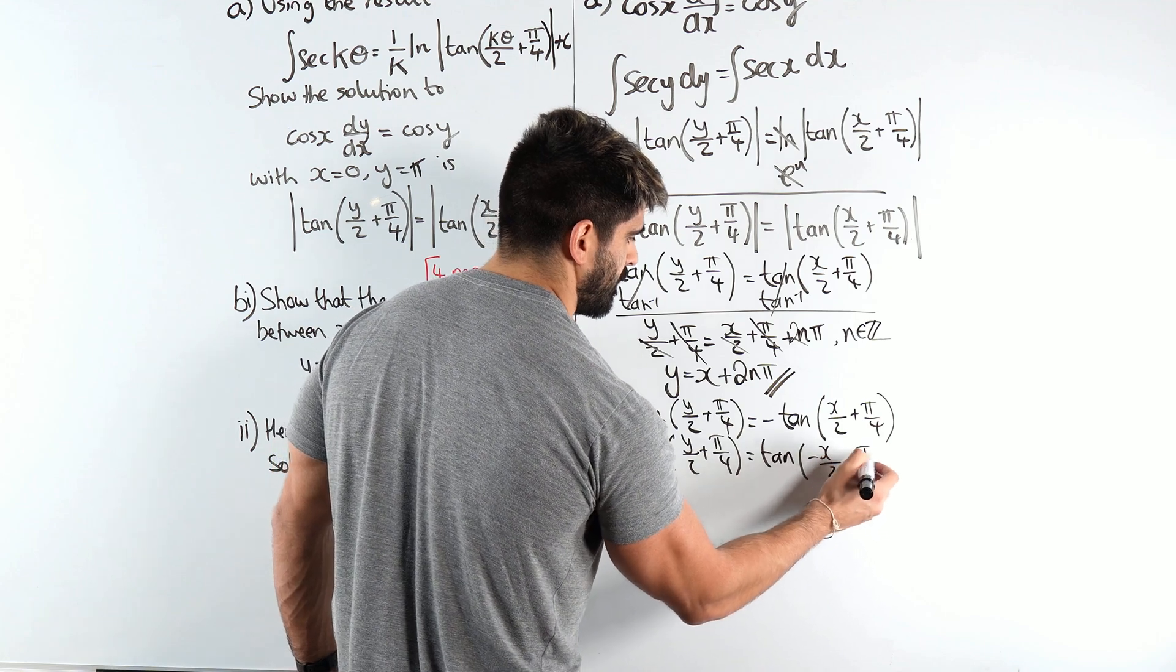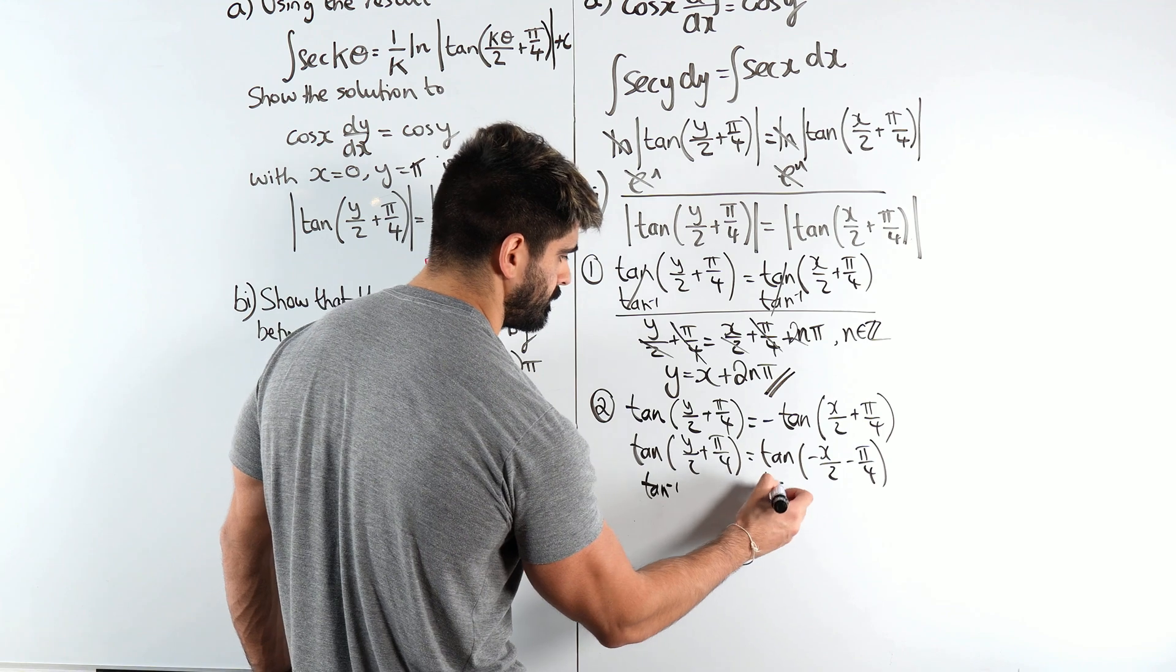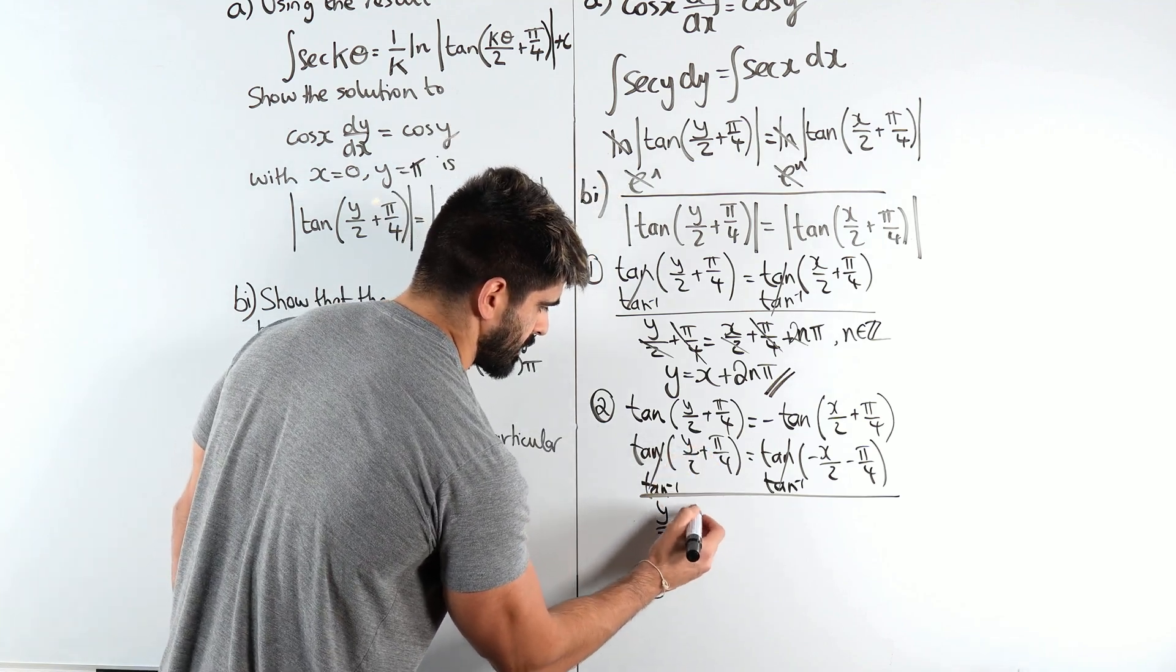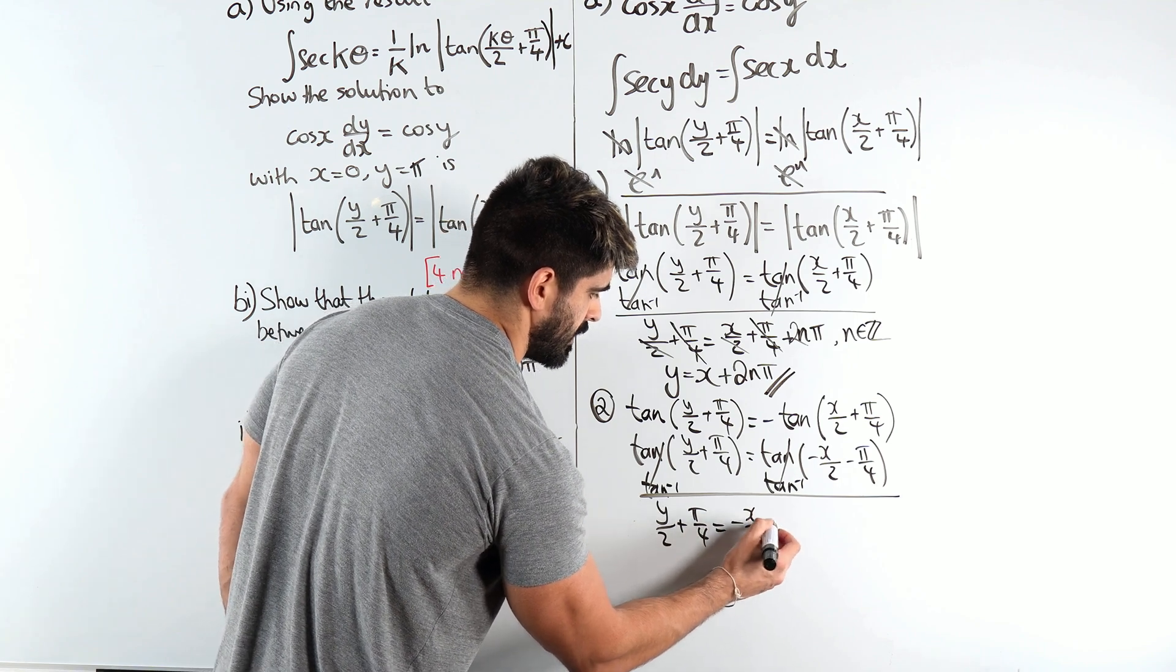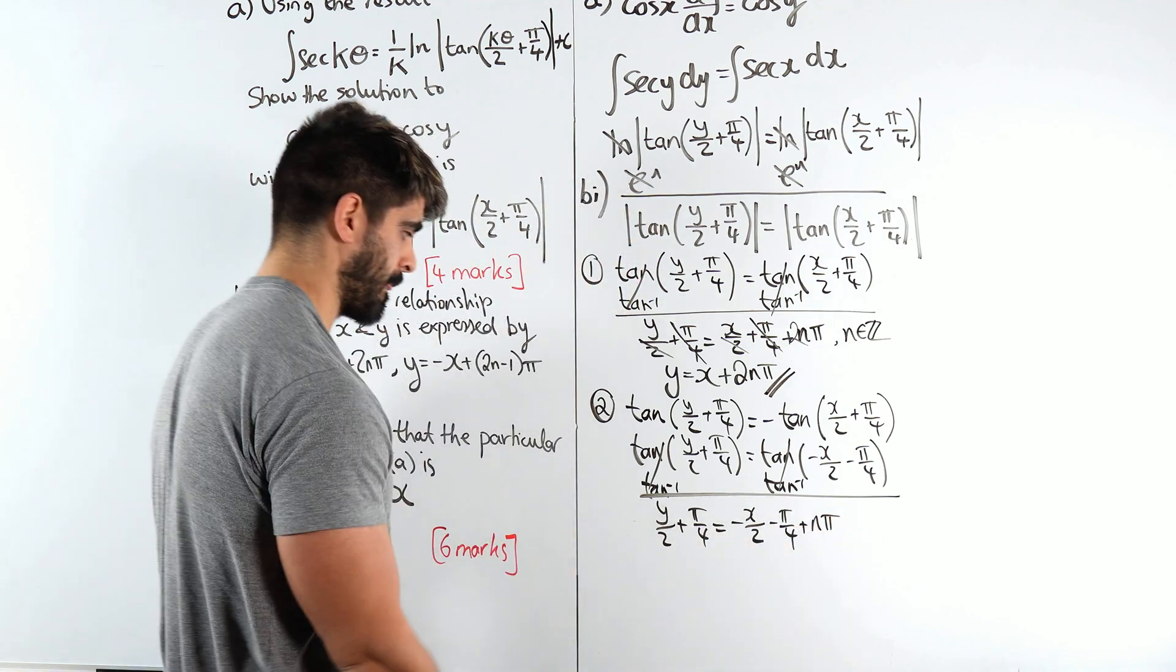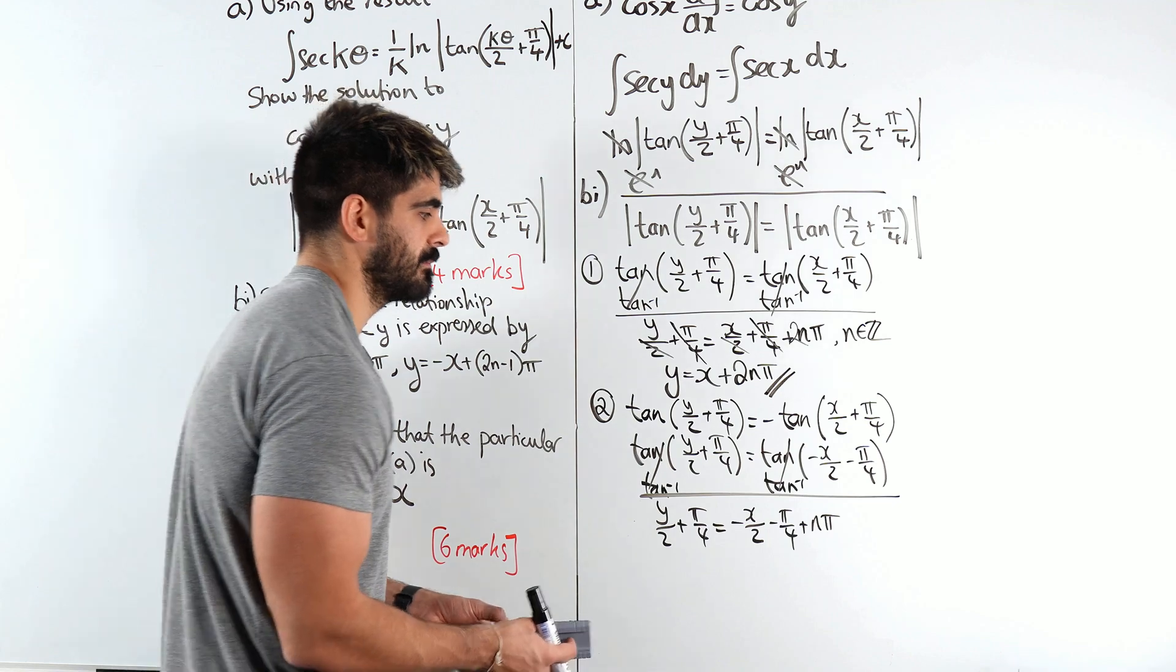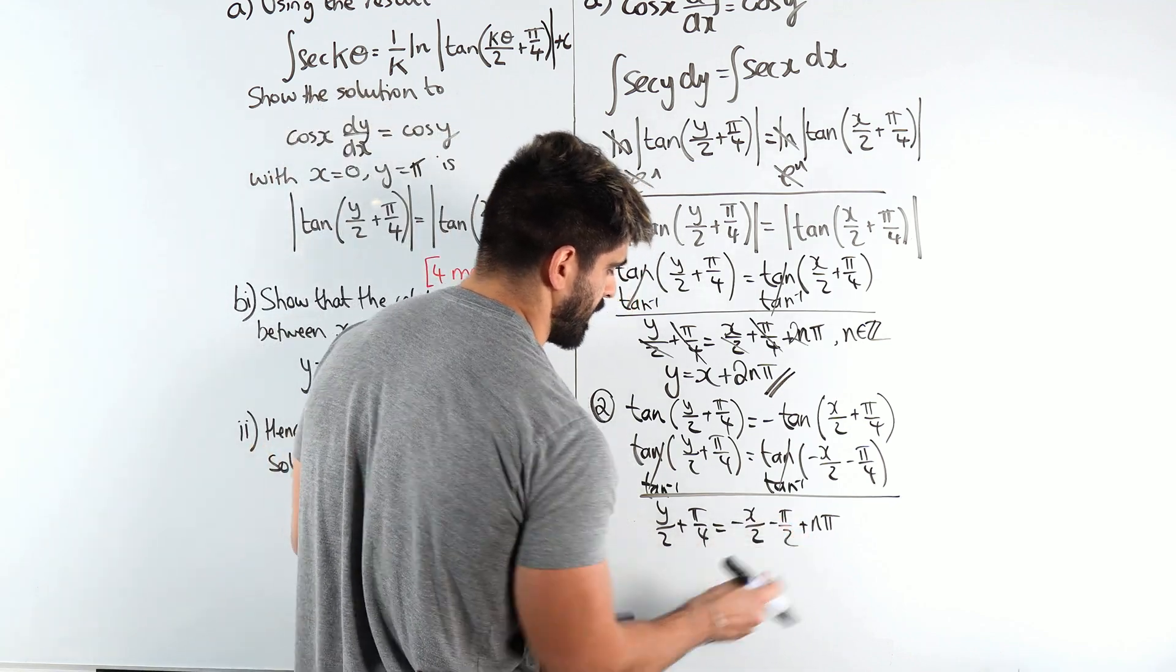Then we're going to do inverse tan, cancel. So we get y over 2 plus pi over 4 is negative x over 2, negative pi over 4 plus n pi. The negative pi over 4 I'm going to bring over here, because they collect and make pi over 2, which is good, because then we can just times through by 2.